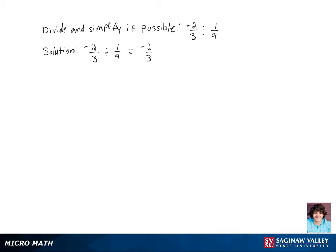So negative two over three divided by one-ninth is the same as negative two over three times nine over one. Then we're going to multiply across the numerator and the denominator to get negative two times nine over three times one.